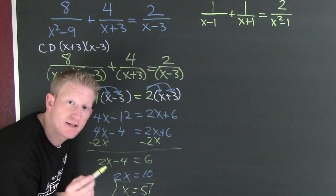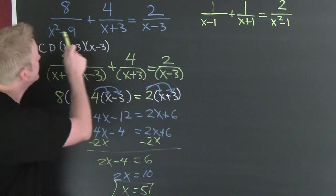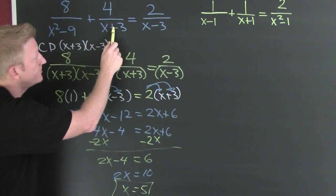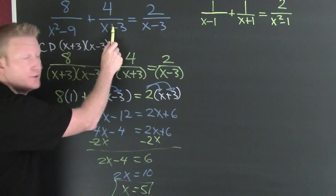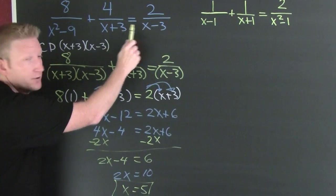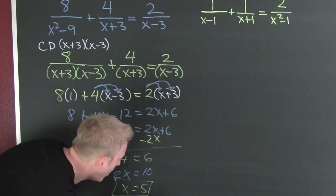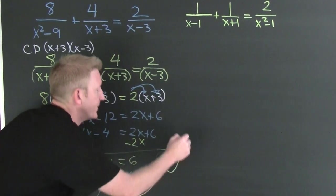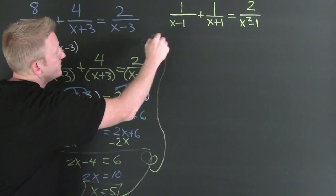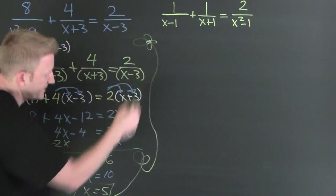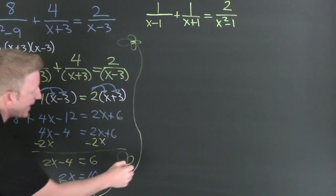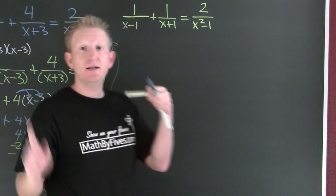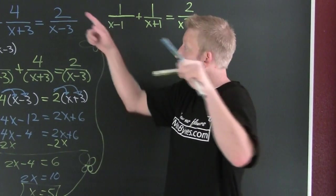Now you need to check something. Does X equals five make this denominator zero? No. Does it make this denominator zero? No. Does five make that denominator zero? No. Five, you are a solution — box it. And now I'm on to the next one.